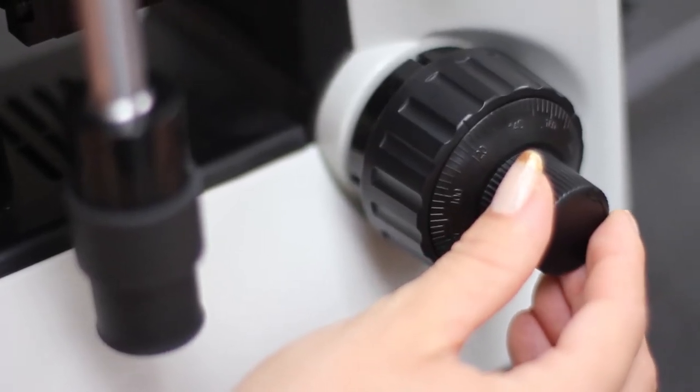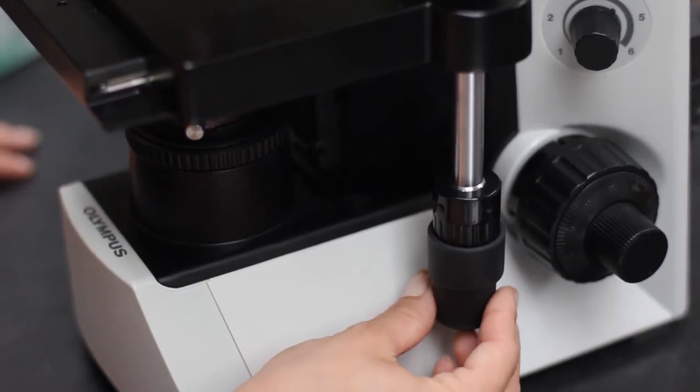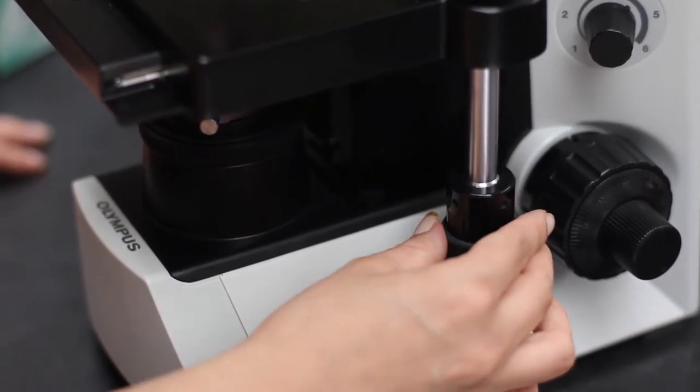Here are some focusing tips. Move the stage using the x and y axis knob. If the image moves, then you know you are looking at the slide. If it does not, you are probably focused on the condenser lens.